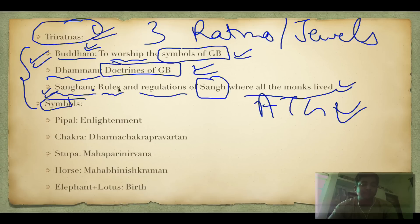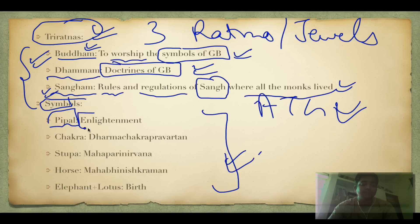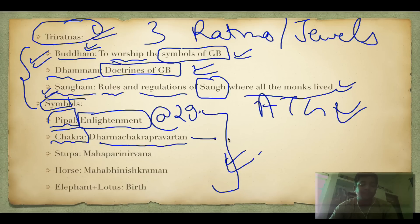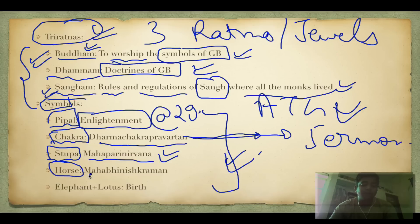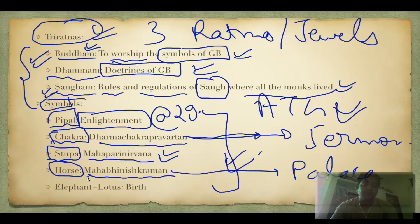The symbols of Buddhism are very important. The Peepal tree represents the place where he attained enlightenment at age 35. The Chakra represents Dharmachakra Pravartana — his first sermon. The Stupa near Varanasi represents Mahaparinirvana — moksha. The horse represents Mahabhinishkramana — leaving the palace. When his mother was pregnant she saw a dream of an elephant and a lotus, which is related to his birth.